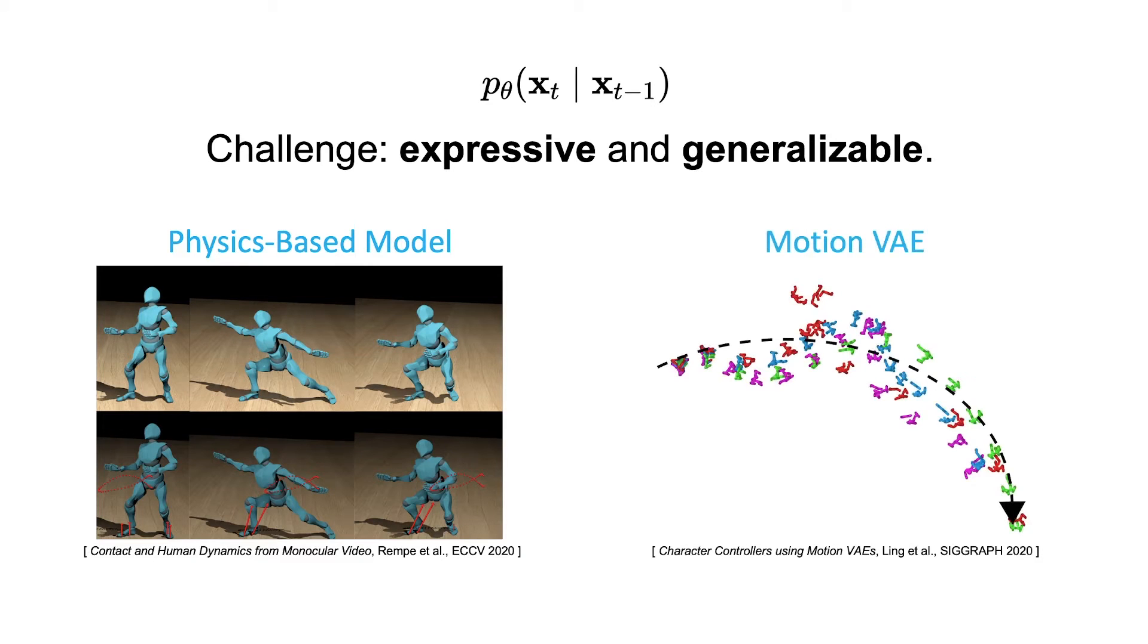On the other hand, learned models like MotionVAE nicely handle future uncertainty, but struggle to generalize past a small set of body shapes or motions. Humor uses a similar learning-based approach, but takes inspiration from physics-based models to enable successful generalization.